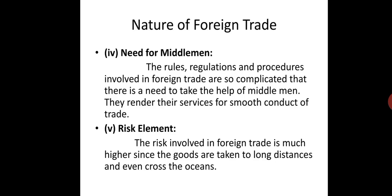Fourth is the need for middlemen. The rules, regulations, and procedures involved in foreign trade are so complicated that there is a need to take help of middlemen — agents and commission agents — for smooth conduct of trade. Foreign trade has many rules and regulations to be followed for importing or exporting, along with a lot of paperwork. A common person or a producer focused on production rather than purchasing may not easily understand all this. When you have an agent or commission agent, they handle all the necessary paperwork and give a smooth flow to the importing and exporting of goods.